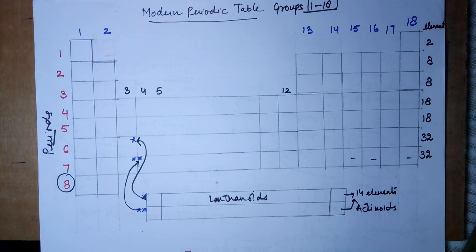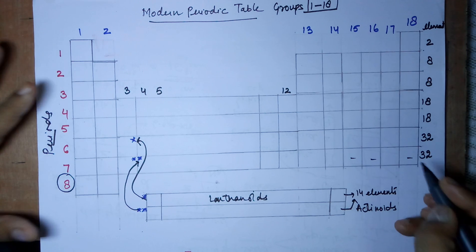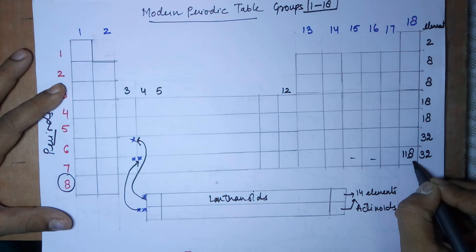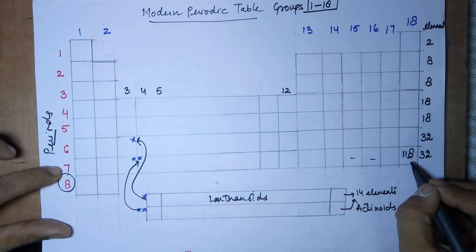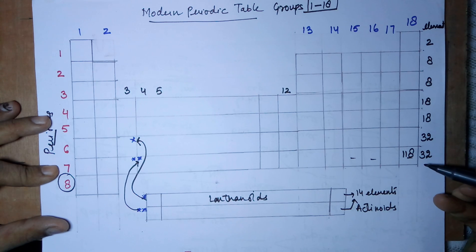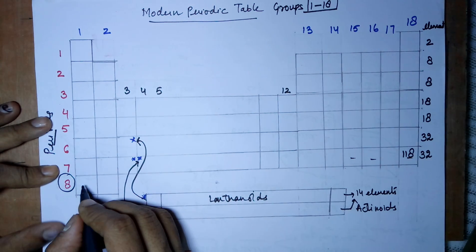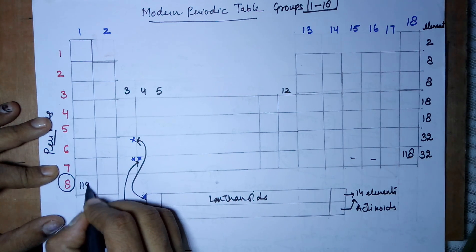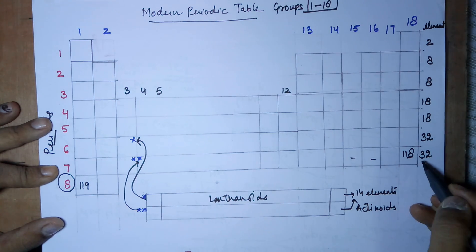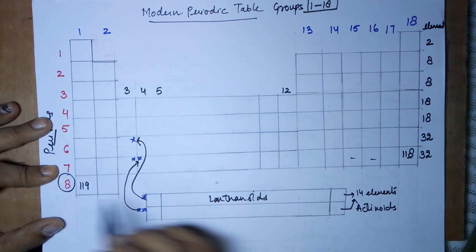The eighth period is shown just to help you understand that we can have a next period. As of now the last element discovered is 118, which falls in the seventh period, eighteenth group. As soon as the next member — element 119 — is discovered, it would come here in the eighth period.